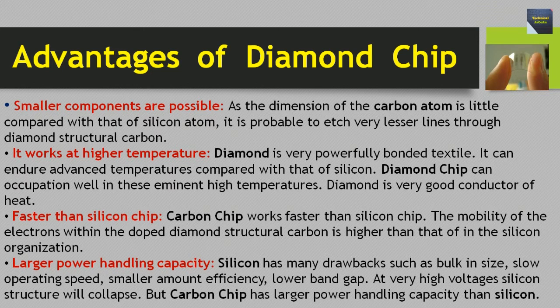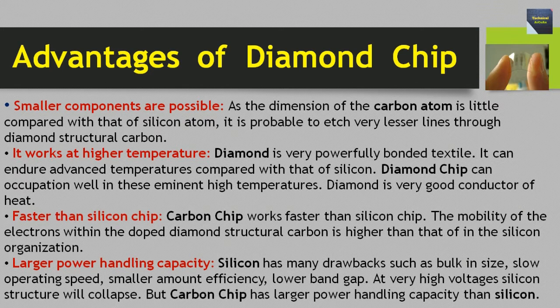Third advantage: faster than silicon chip. Carbon chip works faster than silicon chip — the mobility of electrons within the doped diamond structural carbon is higher than that in the silicon structure. Fourth advantage: larger power handling capacity. Silicon has many drawbacks such as bulk in size, slow operating speed, lower efficiency, and lower band gap. At very high voltages the silicon structure will collapse, but carbon chip has a larger power handling capacity than silicon.